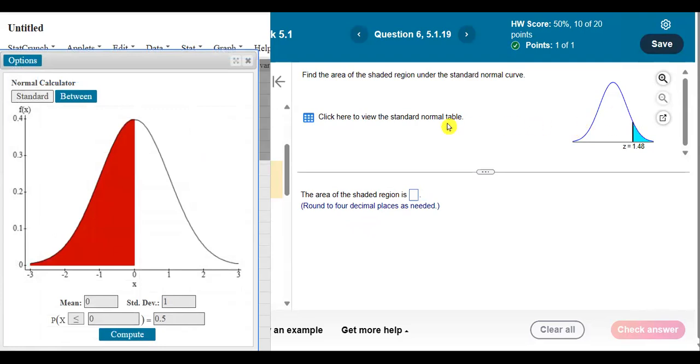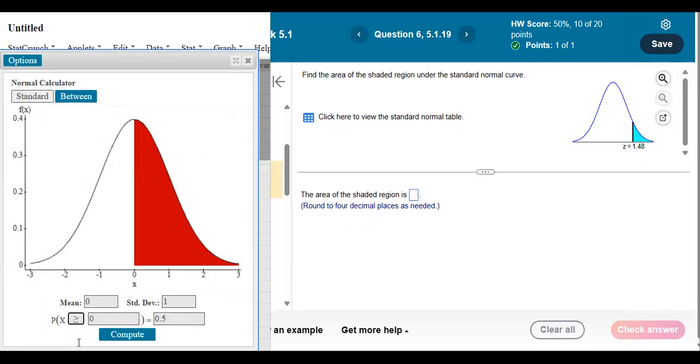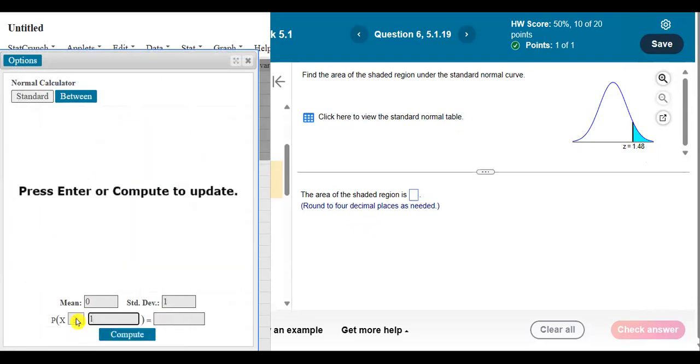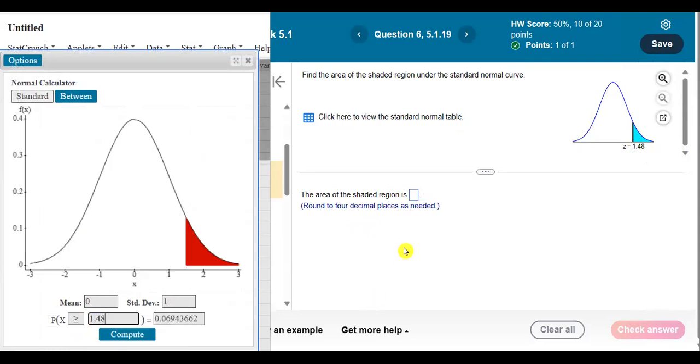Now, for this particular problem, we are looking to find the shaded area. It's to the right of the z-score of 1.48, so I need to make sure I switch this. It needs to be pointing to the right, greater than or equal to 1.48, hit Enter or tap Compute, and you're going to get your area.